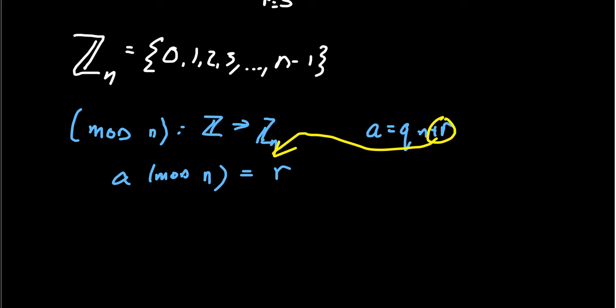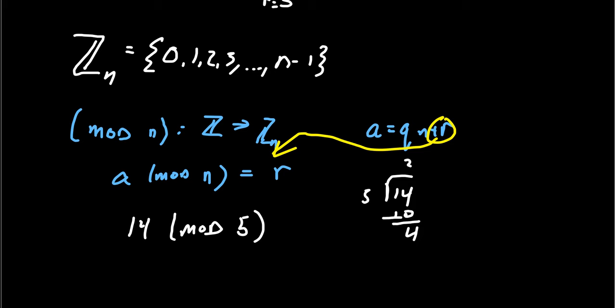Taking a mod n means: give me the remainder when you divide by n. For example, 14 mod 5 — we want the remainder when we divide 14 by 5. Five goes in 2 times (that's 10), leaving a remainder of 4. So 14 mod 5 equals 4. Or 8 mod 3: 3 goes into 8 two times (that's 6), leaving a remainder of 2. So 8 mod 3 equals 2.